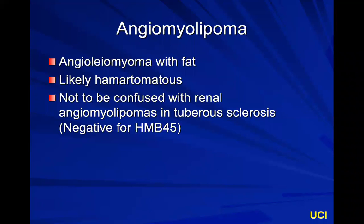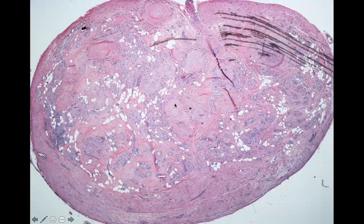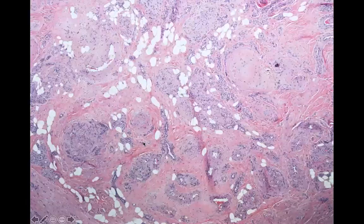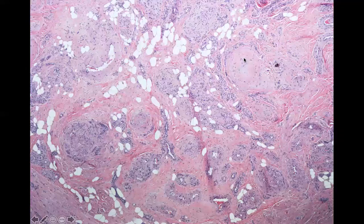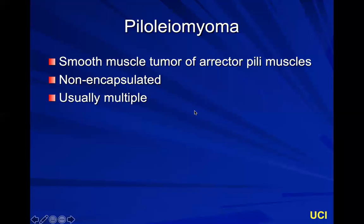An angiomyolipoma is essentially an angioleiomyoma with fat, and it's likely a hamartomatous tumor. Don't confuse this with renal angiomyolipomas of tuberous sclerosis — those are different tumors with the same name. Here again is your pink nugget. The tumor spins off crack spaces (blood vessels), and you also see fat in between. Up close, some nuclei are cut side-to-side giving cigar shapes, others are cut cross-sectionally giving circles, and the little white vacuoles — glycogen snacks — confirm smooth muscle.